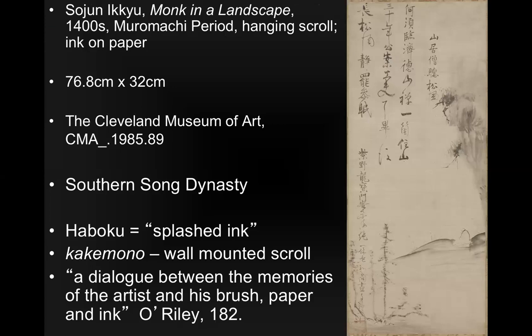The style we saw in China — this accidental style of painting where you might do the same piece a thousand times and one turns out just right, from the Southern Song Dynasty — is what we see a lot of in this haboku splashed-ink style. This particular one is a kakemono, which means a wall-mounted scroll. As we talked about with China, ink and paper made it easier for people to do these pieces, and since materials were widely available, this style was able to develop. O'Reilly says this one is a dialogue between the memories of the artist and his brush, paper, and ink.